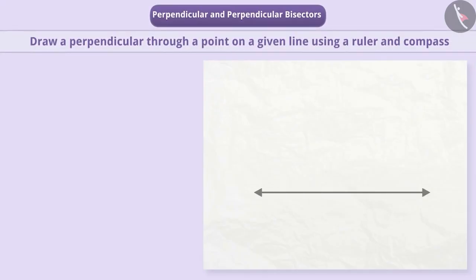In geometry, a ruler and compass is often used to draw a perpendicular through a point on a given line. Let's understand this method.